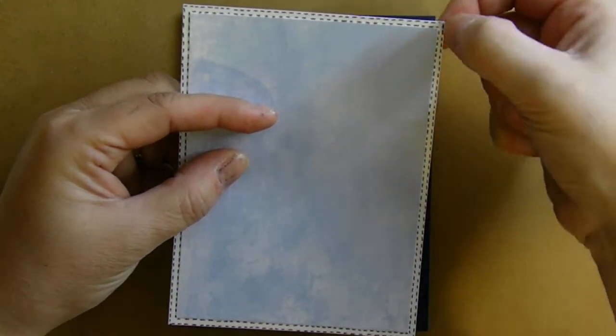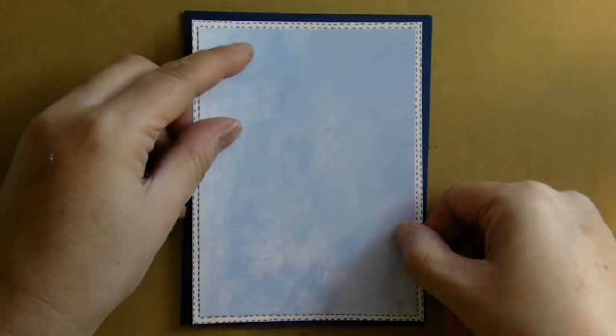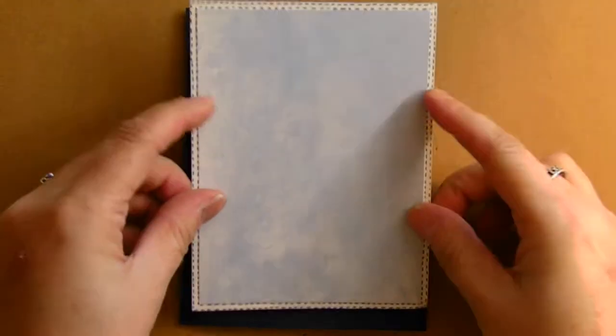So one on the edge of the white and one on the edge around the other border and I'm just going to take my ATG gun real fast and I'm going to put that in the center of the base of the card. Getting the adhesive out of the corner.